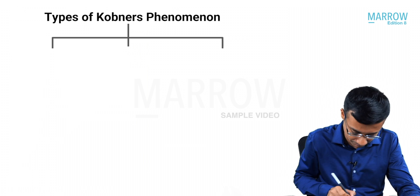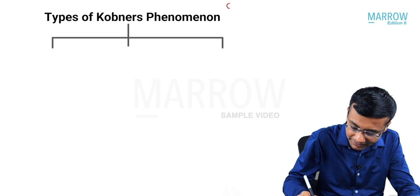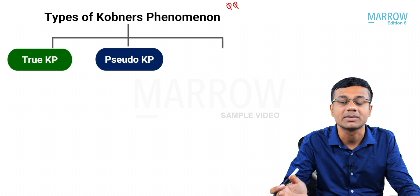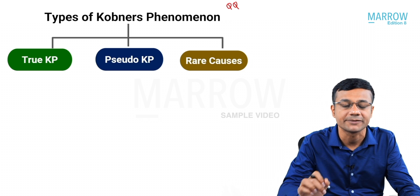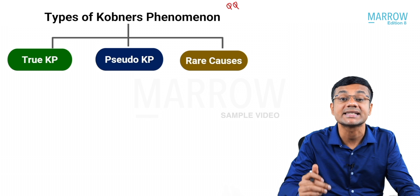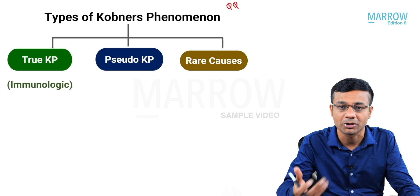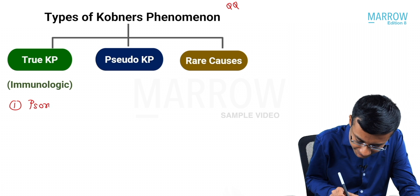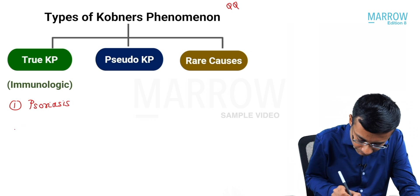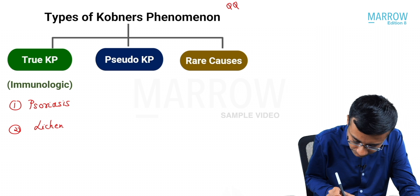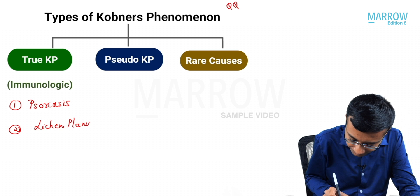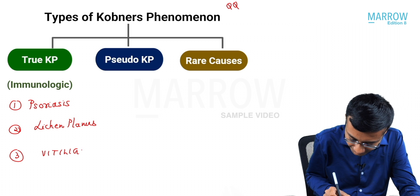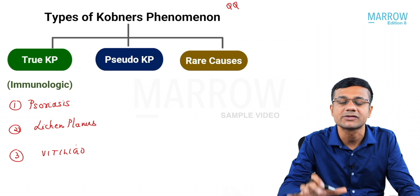The types of Koebner's phenomenon are an important exam question. There are three types: true Koebner's, pseudo Koebner's, and rare causes. True Koebner's mechanism is immunologic. Three examples are psoriasis, lichen planus, and vitiligo.